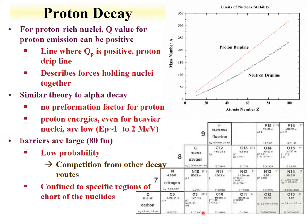Here are examples of some low-Z elements with isotopes that decay by proton emission. For fluorine-15 and -16, there are proton decays. Oxygen-12 has two-proton decay; oxygen-13 has a probability of proton decay. Nitrogen-10 and -11 have proton decay. Carbon-8 has a proton decay and there's a probability for carbon-9. These are all very proton-rich, neutron-deficient isotopes that can undergo this decay. You can find where they're located on the chart of the nuclides by looking for the proton decay symbol, either two-proton or single-proton decay.